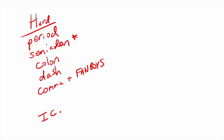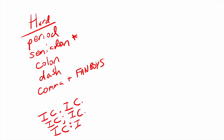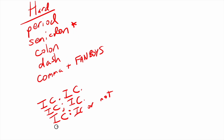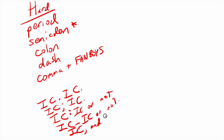So we could have an independent clause, a period, another independent clause. We could have an independent clause, a semicolon, another independent clause. With the colon and the dash, they don't have to be followed by an independent clause, but they can be. And with the conjunction — I'll just use 'and' as the example since that's the most common — all of those are going to be legal ways to join two independent clauses.